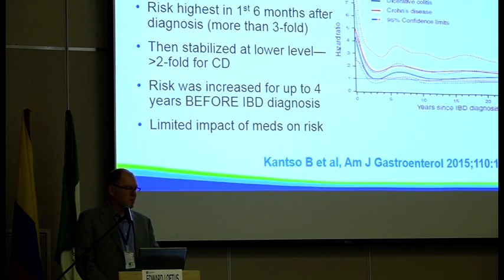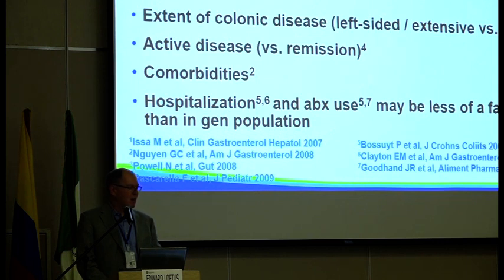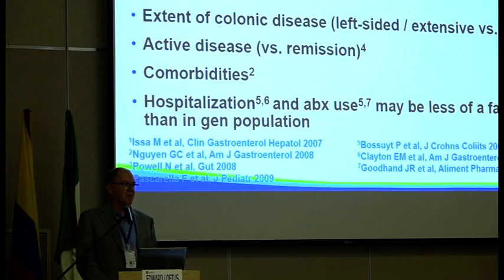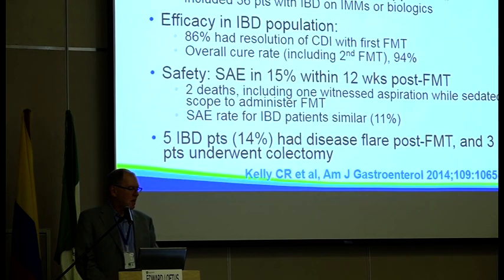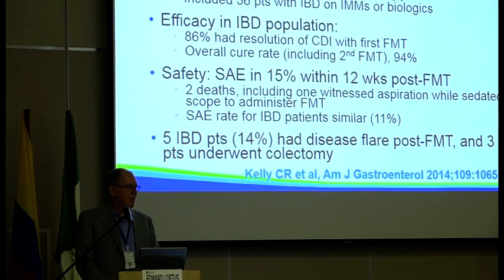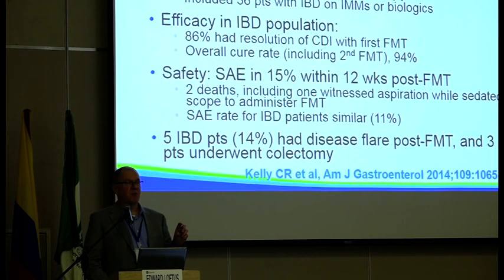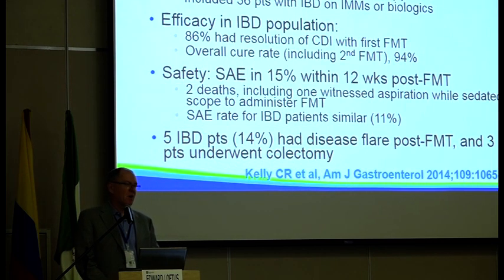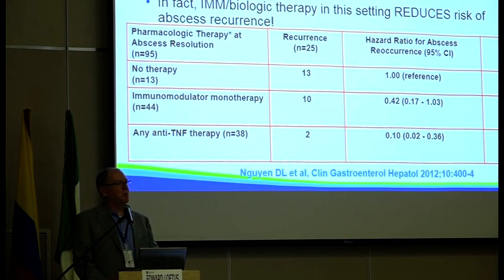For C. diff, beyond the traditional risk factors, just having IBD itself and colonic disease is a known risk factor. C. diff can increase the severity of IBD, prolong length of stay, and increase colectomy rates. There have been studies looking at fecal microbial transplantation in IBD patients with recurrent C. diff — in one study of 80 immunosuppressed patients, the efficacy of FMT is slightly lower in IBD patients but still pretty good. However, a small percentage of patients will have a transient worsening of their IBD when treated with FMT.